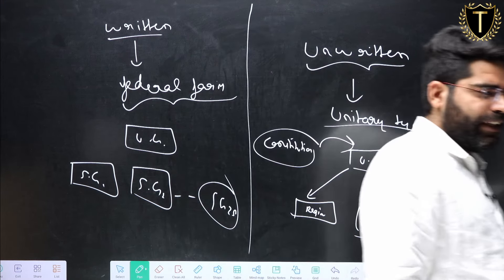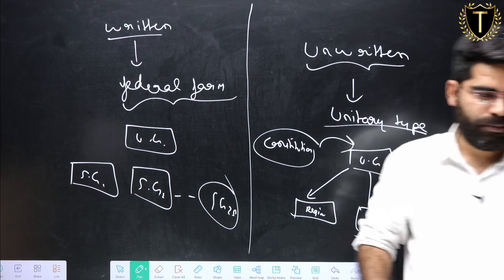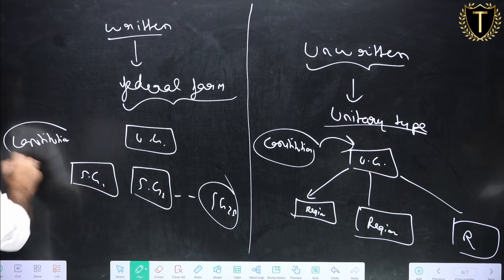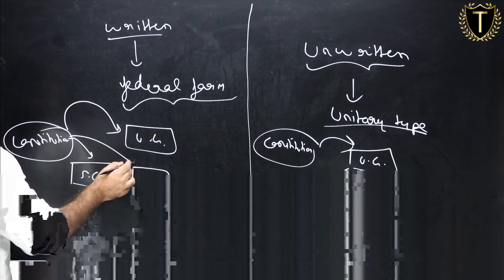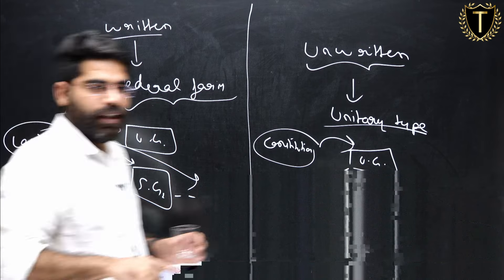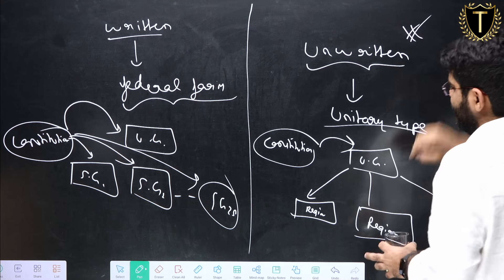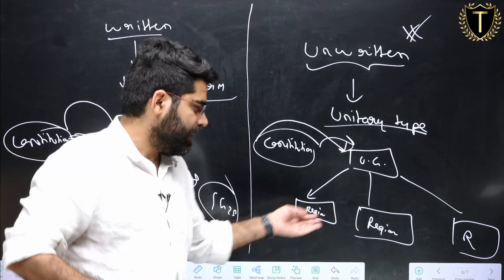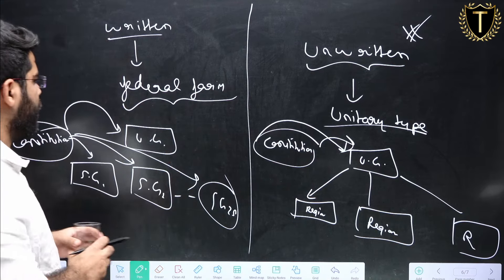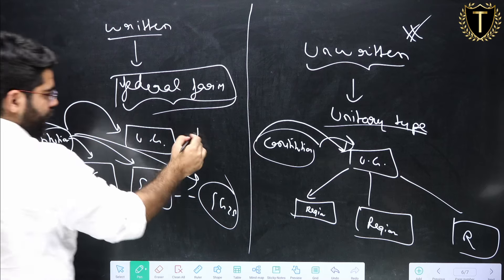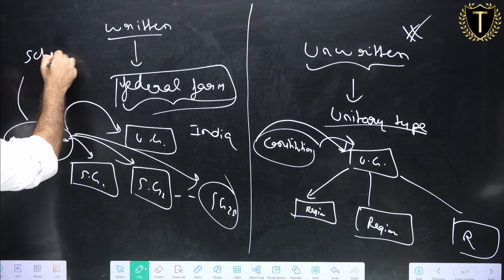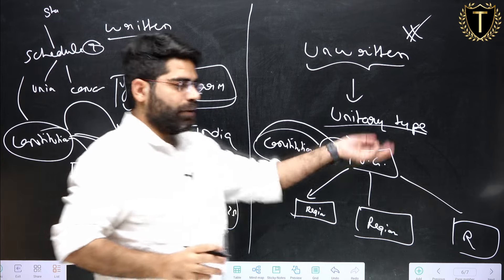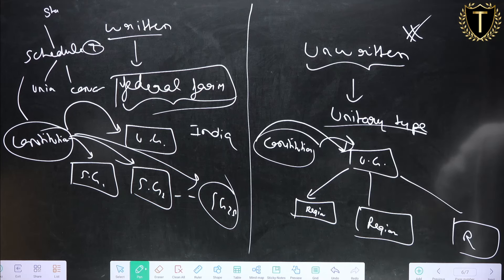In a federal system, it is the constitution itself that distributes power to both the union government and the state governments — for example, in India, Schedule Seven distributes subjects between the Union List, State List, and Concurrent List. But in a unitary system, as in the UK, the constitution gives power only to the union government, which then further distributes powers to the regions. There is no constitutional distribution of powers between the state and the centre.